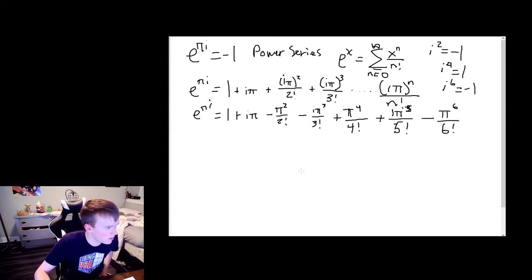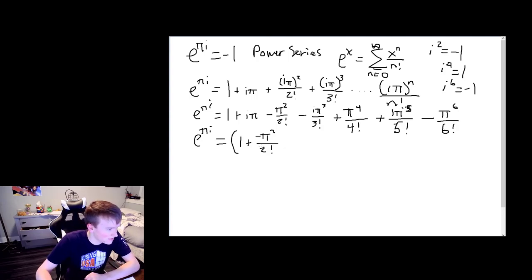This series will repeat like this forever. Now, why do we care? This seems not very helpful. Why it is helpful, actually, is we can consolidate all the odd terms. So the one, negative π² over 2!, positive π⁴ over 4!. Let's group all those together. Hopefully this should look awfully familiar. Oh wait, I wrote plus negative. I don't know why I did that. Minus π⁶ over 6!.